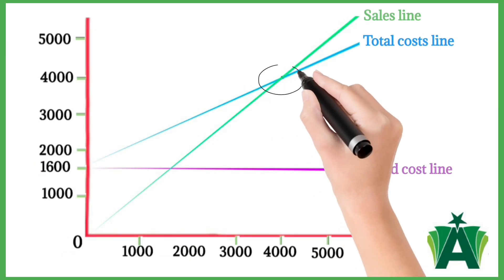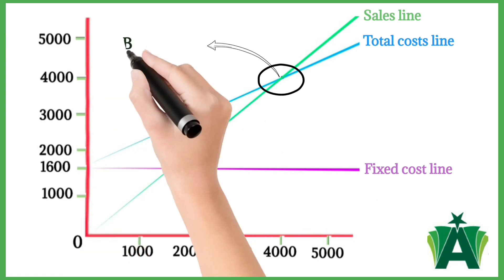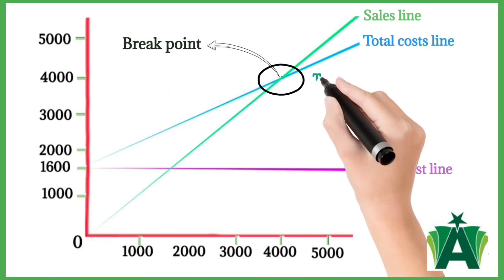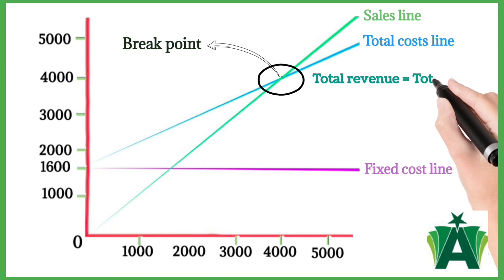The total cost line intersects the sales line at the break-even point. It's the point where your total revenue equals your total costs.